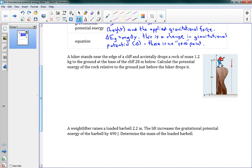Okay, well we'll use our equation. Delta EG is equal to MG delta Y. Delta Y, it goes down. Or in this case, we're talking about the potential energy at the top of the cliff. So delta Y is 28 meters above the ground. So positive 28 meters.